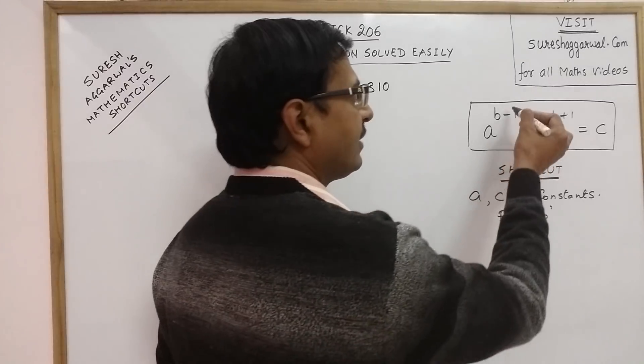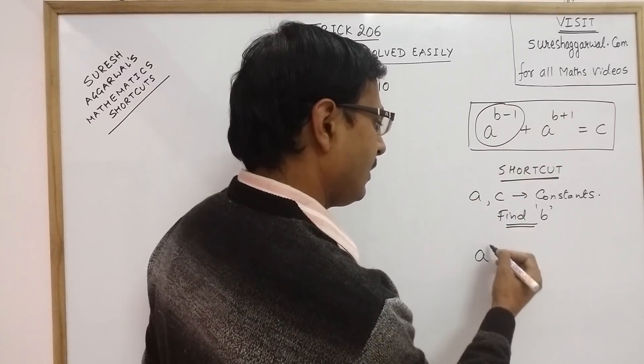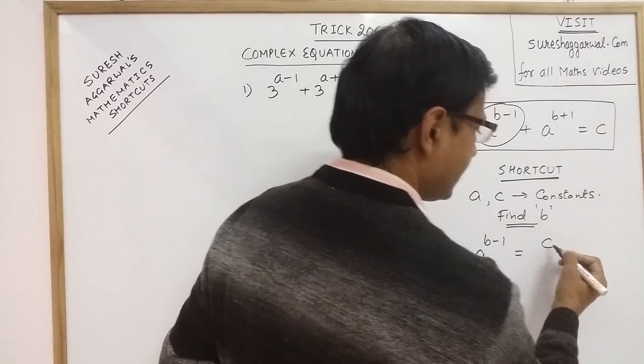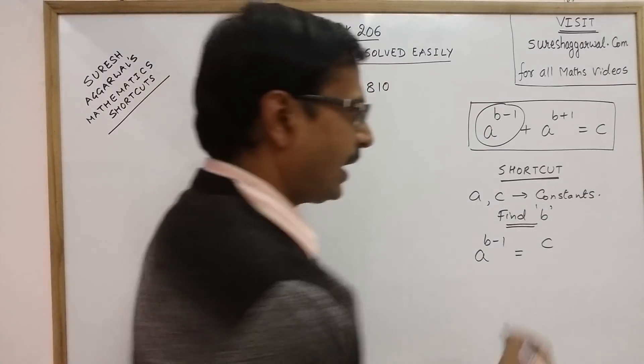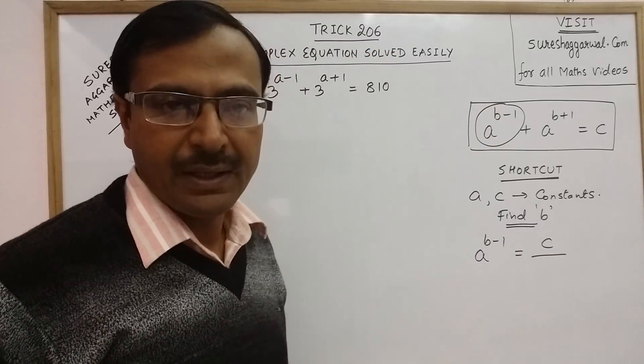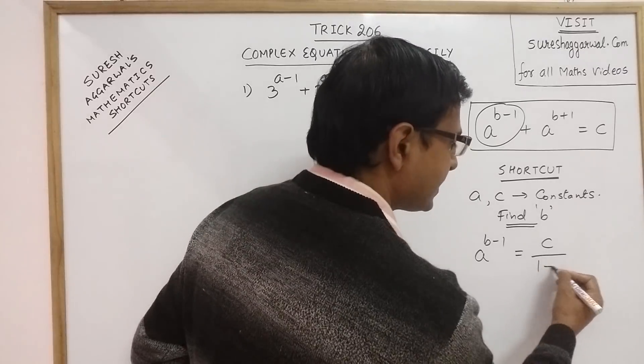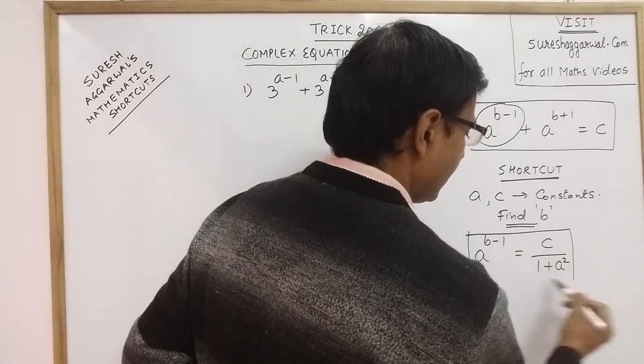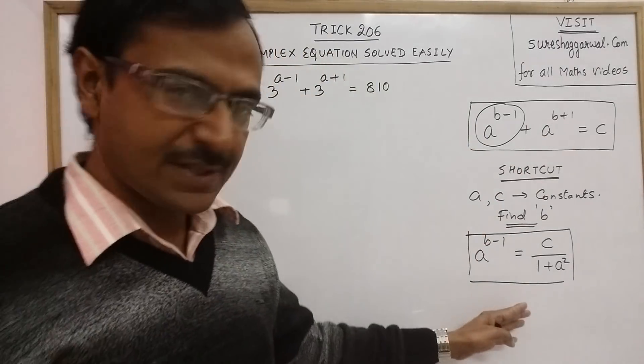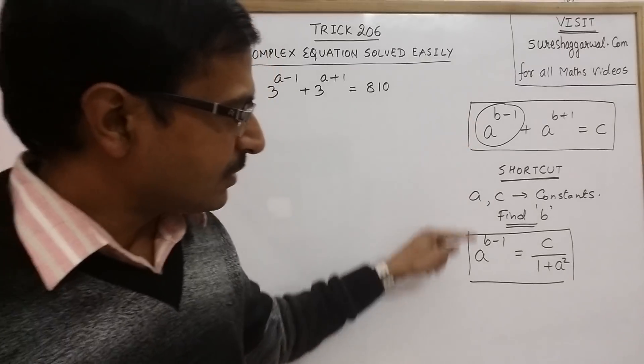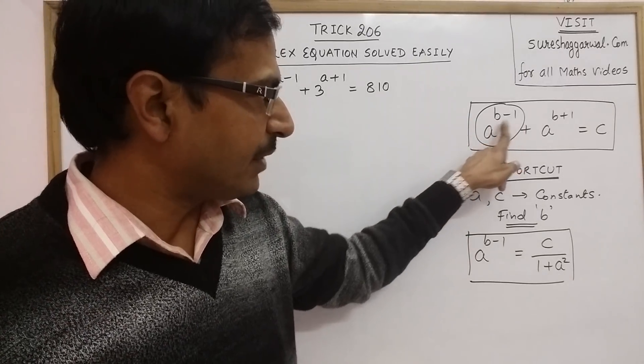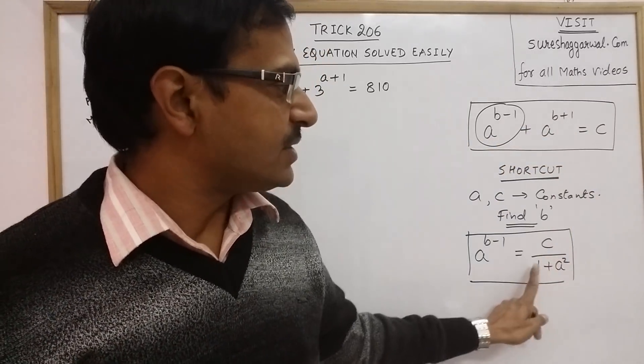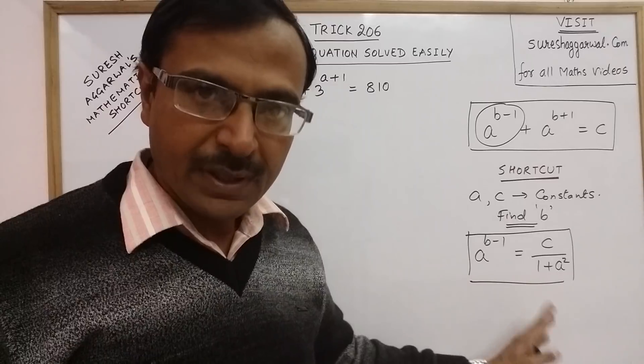What you do is, take the first term, take the first term, a power b minus 1, take the RHS, c and just divide this by 1 plus a square. Now you have to reduce the equation to this form first. Take the first term, which is the difference of the two terms in the power and take the RHS as it is and just divide it by 1 plus a square.